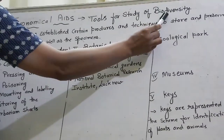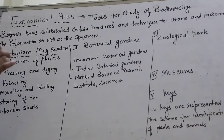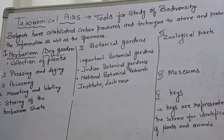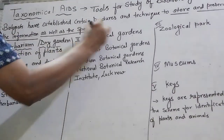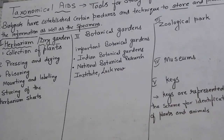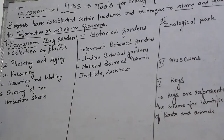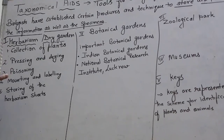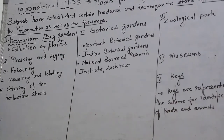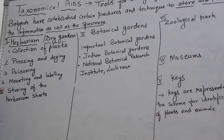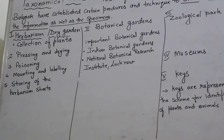This is a tools for study of biodiversity and types of species. Biologists have established certain procedures and techniques to store and preserve the information as well as specimens. When you go to the bio lab, you can see some specimens kept in jars, some permanent slides, some species preserved in files, and manuals. This biodiversity has millions of species, and we need organized ways to access information for research.